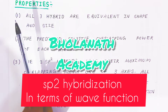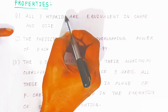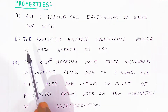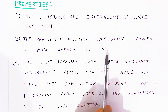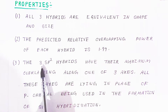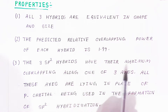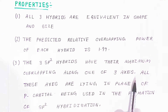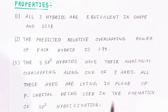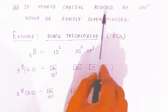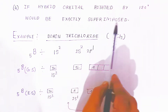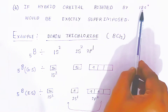We are going to see the properties of sp2 hybridization. All three hybrids are equivalent in shape and size. The predicted relative overlapping power of each hybrid is 1.99. The three sp2 hybrids have their maximum overlapping along one of three axes. All these axes are lying in the plane of the p orbital being used in sp2 hybridization. If hybrid orbitals are rotated by 120 degrees, they would be exactly superimposed, meaning they form a bond angle of 120 degrees.